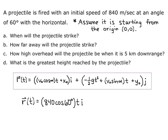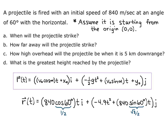We know our initial speed is 840 and our angle is 60 degrees. So r of t equals 840 cosine of 60 degrees times t as the i component, and negative 4.9 t-squared plus 840 sine of 60 degrees times t as the j component. Our x-naught and y-naught are 0, 0. Simplifying, cosine of 60 degrees is one-half and sine of 60 degrees is square root of 3 over 2, giving us r of t equals 420t i plus the quantity negative 4.9 t-squared plus 420 square root of 3 times t, as the j component.